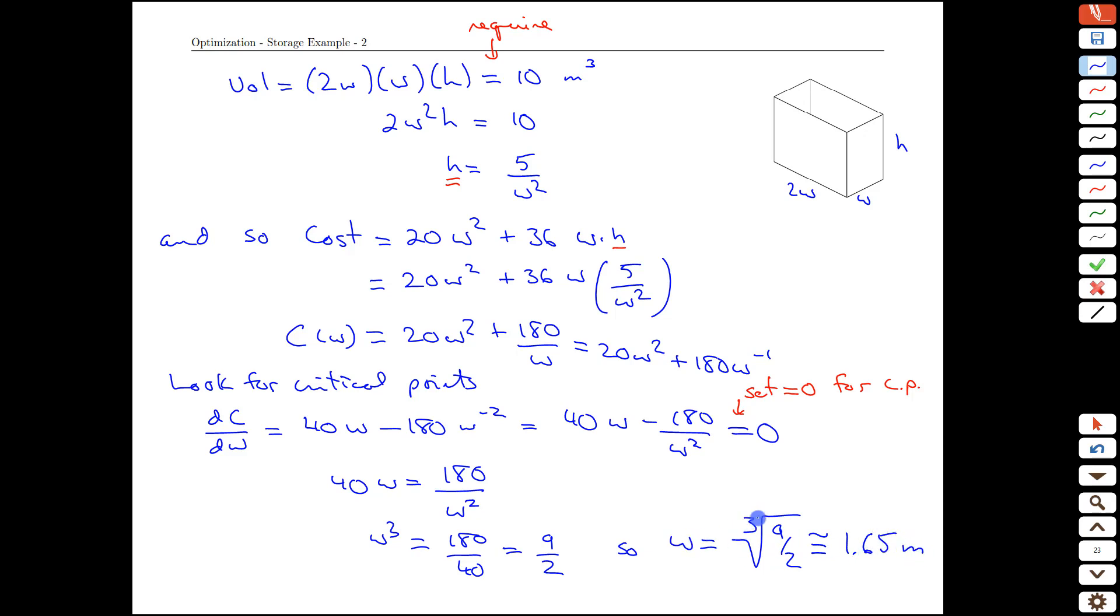As an aside, remember that cube roots don't have plus or minuses. Square roots, there's two possible solutions, but cube roots, the sign comes along with it. If we take the cube root of a positive number, we get a positive number back. All right, we found our optimum value, or at least our critical point. We haven't shown that it's a perfect optimum yet.